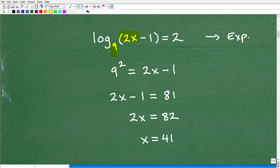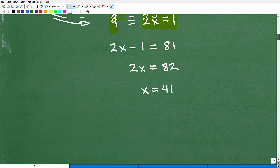2x minus 1 is the answer. Remember, bacon and eggs. So this is 9 is the base. 2 is the exponent. So this is 9 squared. And that's going to be equal to the answer 2x minus 1. So basically I'm rewriting this log as a power equation. So it's going to be 9 squared is equal to 2x minus 1. And hopefully you have the basic algebra skills to solve this. Let's go ahead and solve this now.